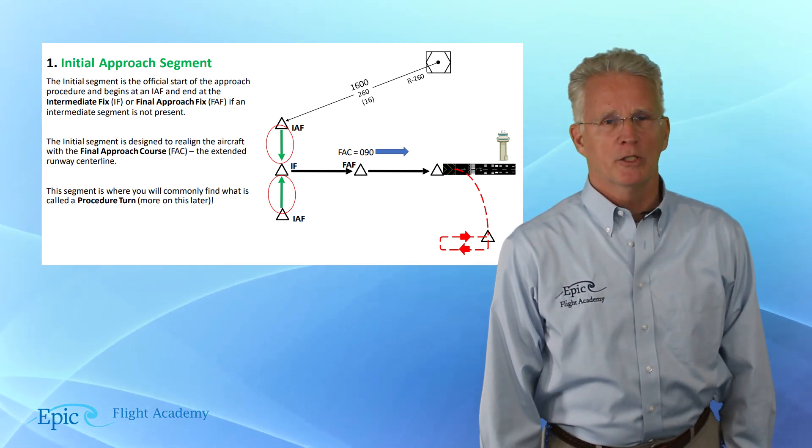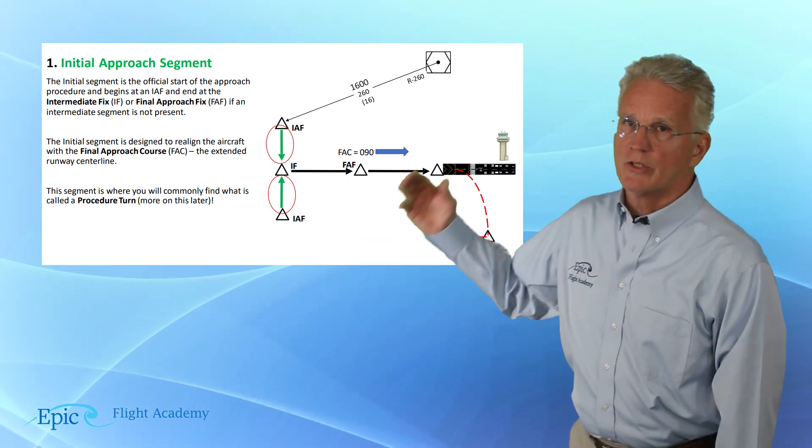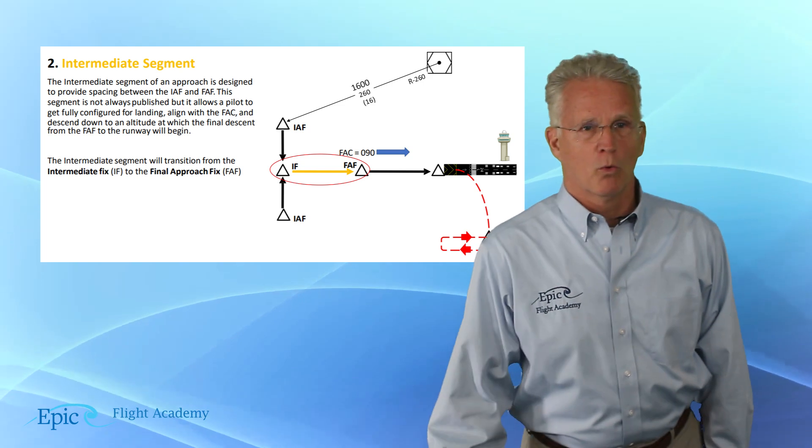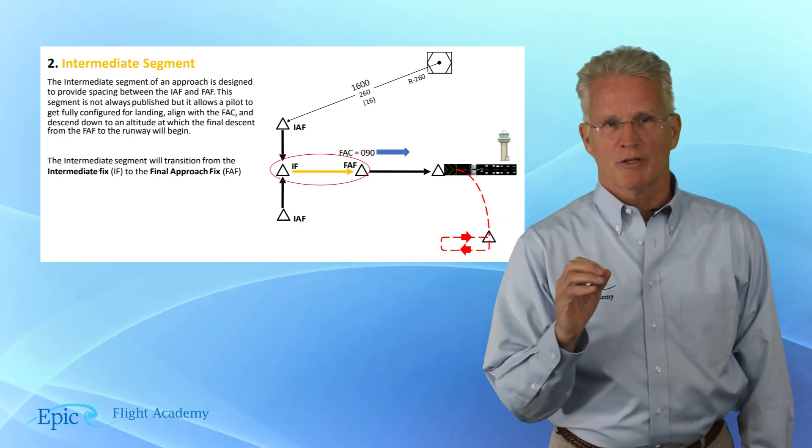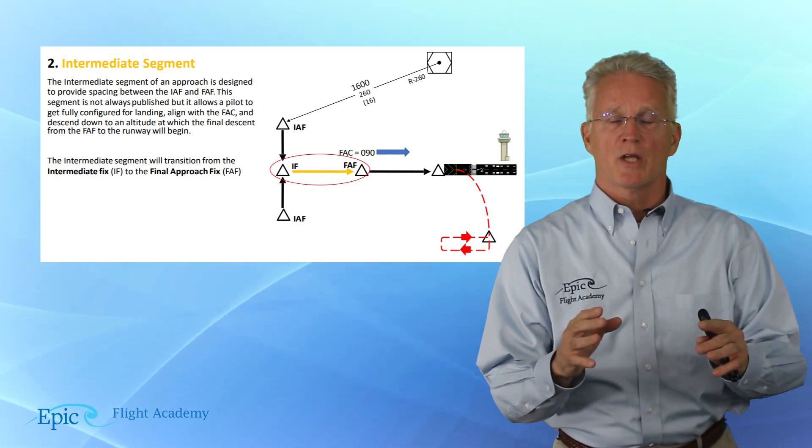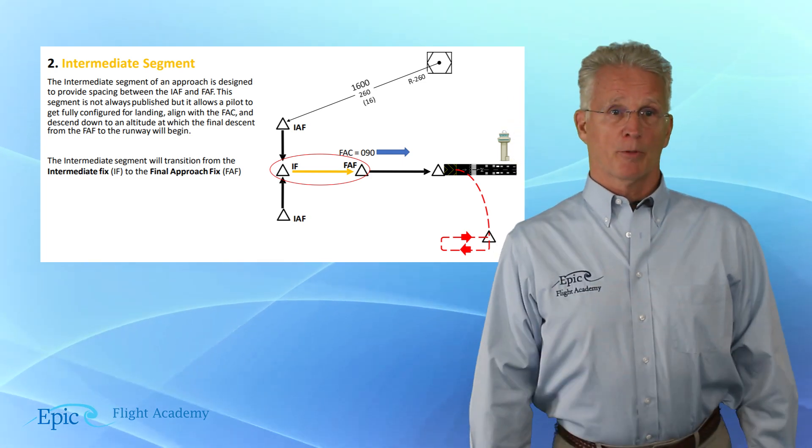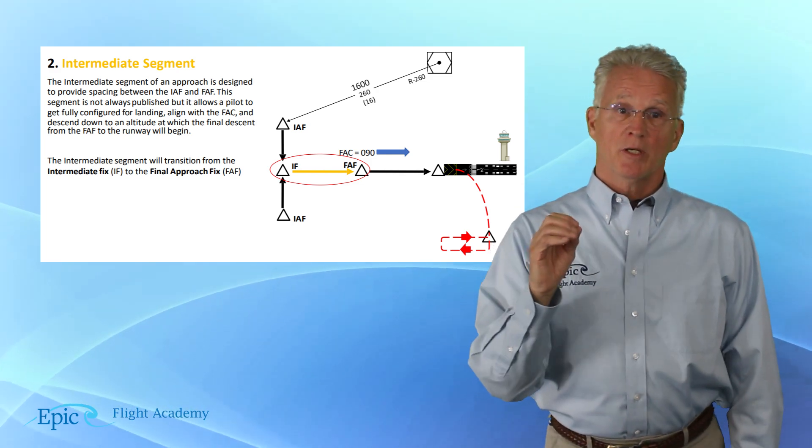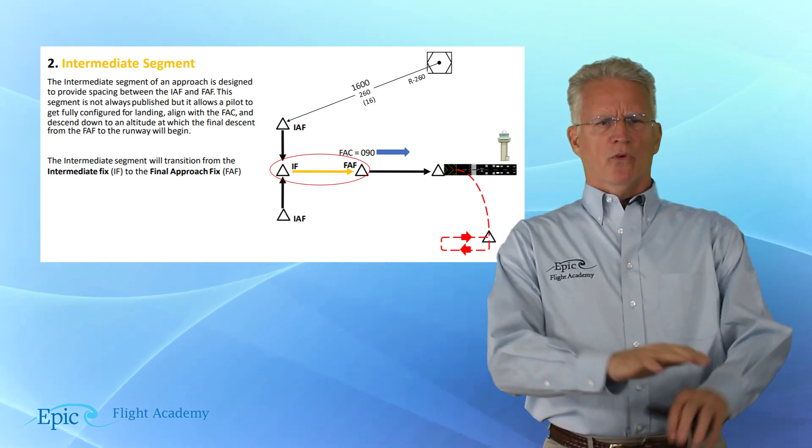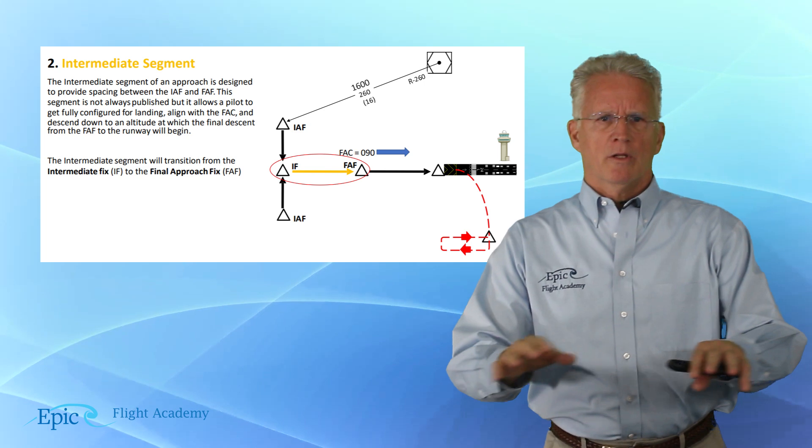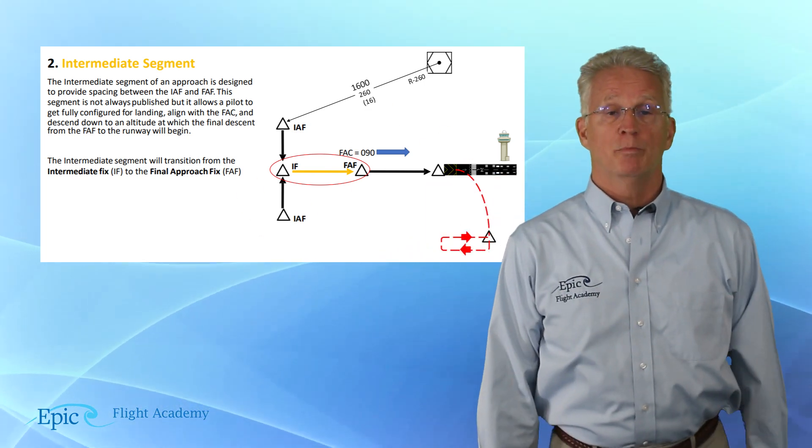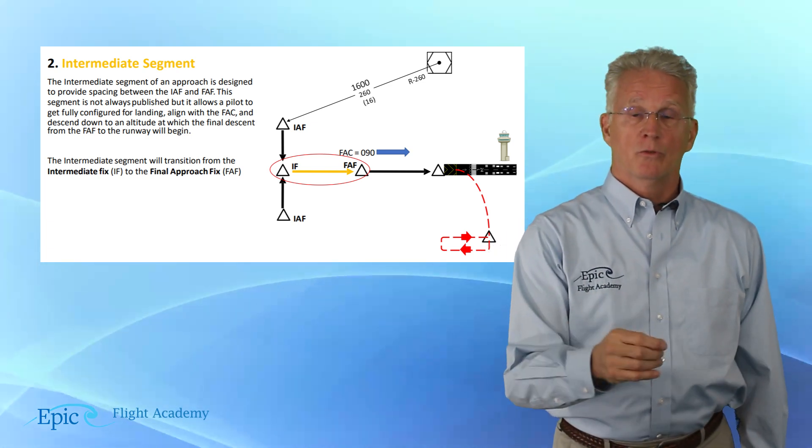Now after the initial approach segment, you can see on the next slide here the intermediate segment is depicted here in orange. This segment is designed to provide some spacing between the initial approach fix and the final approach fix. Now again, this segment is not always published, but when it is, it allows a pilot to get fully configured for landing, align with the final approach course, and descend down to an altitude at which to begin the final descent to the runway.